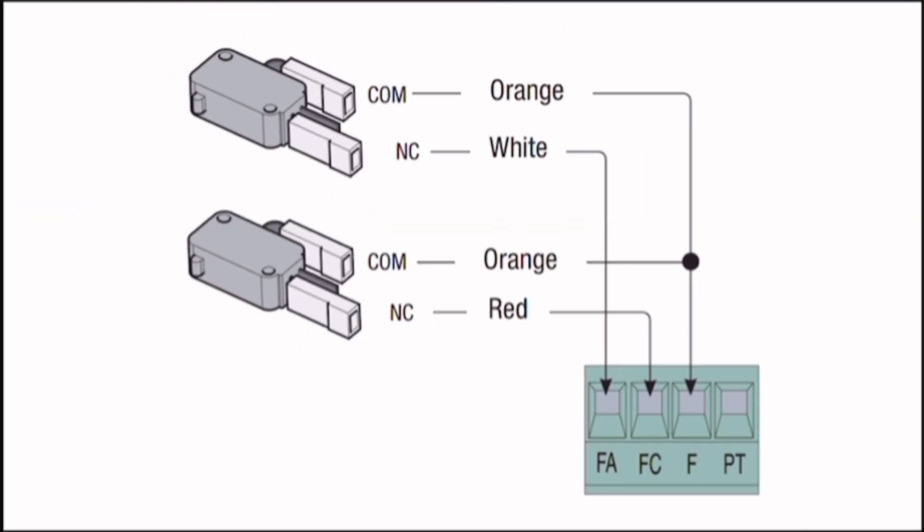This image depicts the wiring connections of limit switches for the CAME ZL37 control board. Limit switches are used to detect the open and closed positions of gates or doors in an automation system. Here's a detailed explanation.